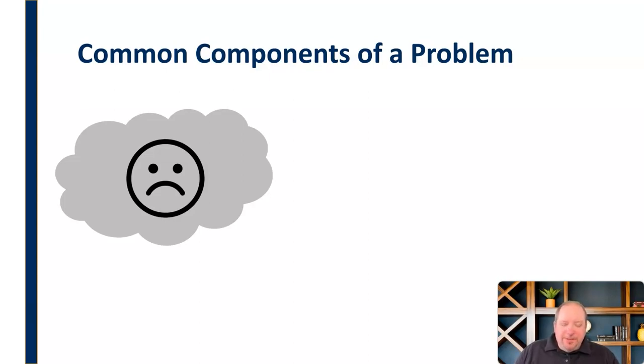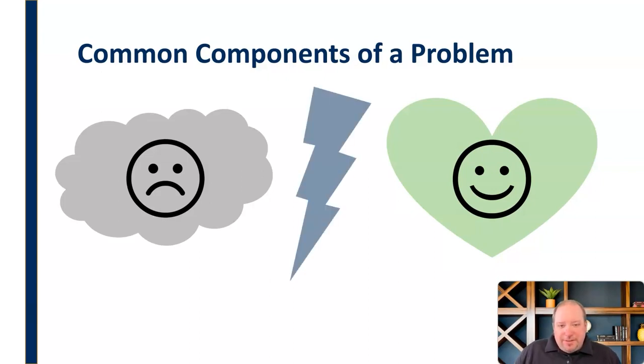And then there is a desired solution, a desired situation. What we would like to see happen. And then in between there we have obstacles that are slowing us or keeping us from getting from that undesirable situation to the desired situation. So we have these obstacles in between. Obviously, most problems are going to have at least those three components.